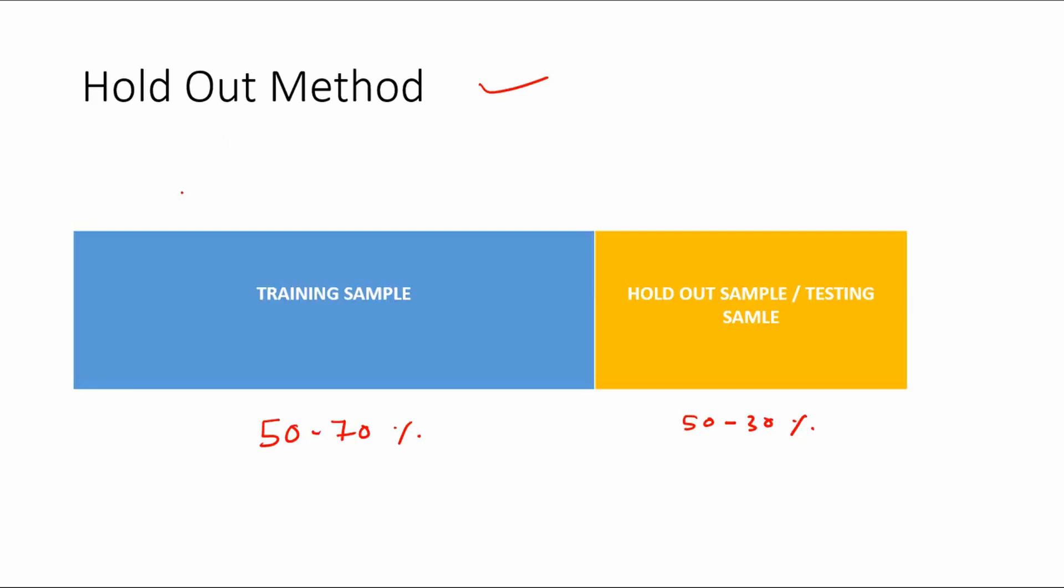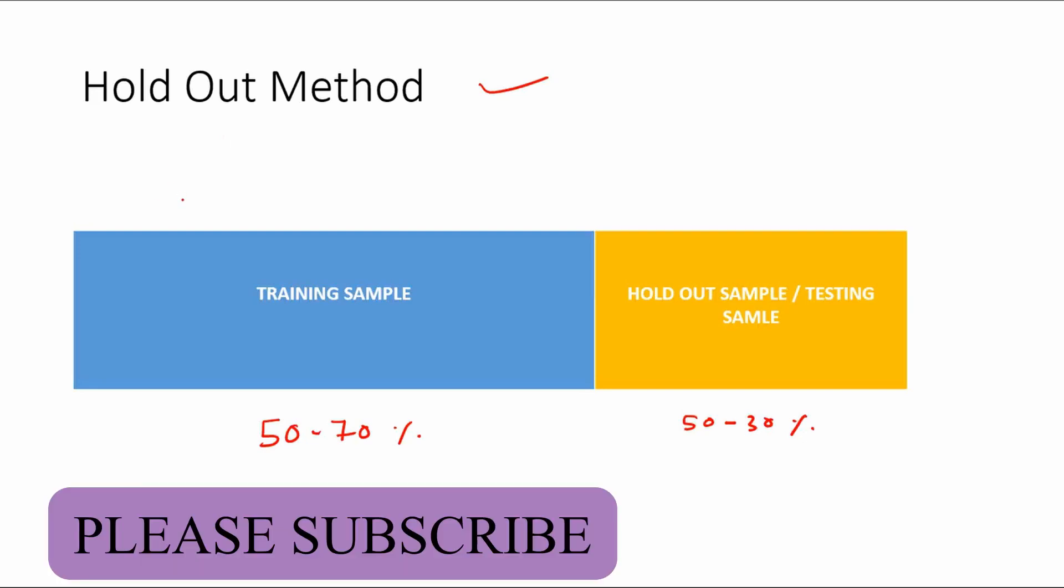in holdout method cross validation is that you divide or split the sample data into two types or two sub-samples. The first sub-sample you call as a training sample. You use that sample to build a model.